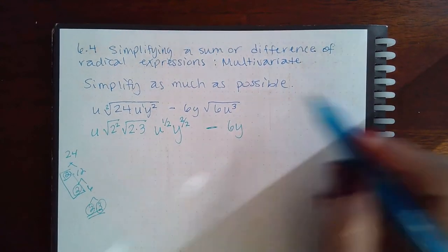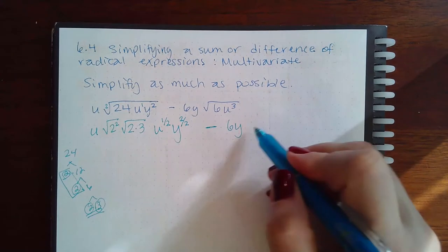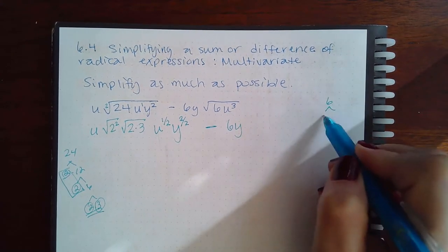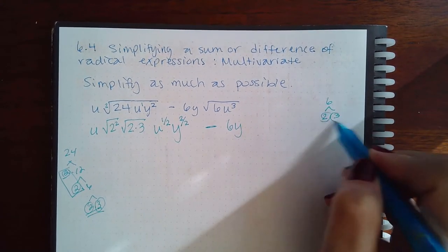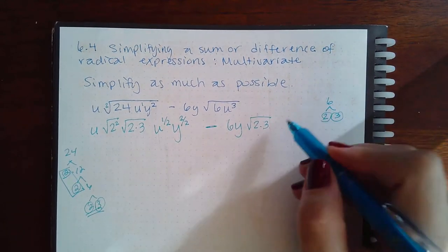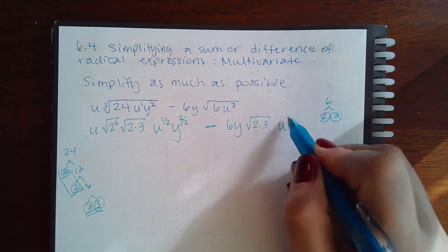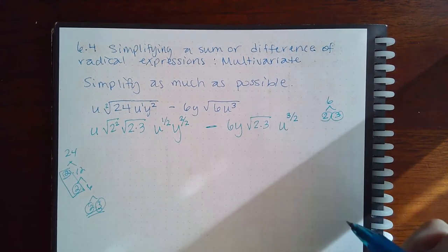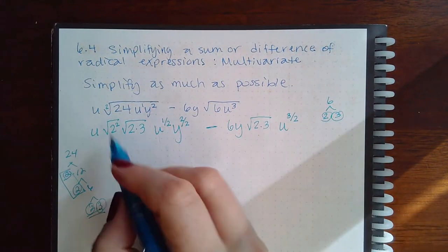Then I have the 6y already there. You can break up 6 but all it breaks up to is 2 and 3 and there's no pairs, so you're just going to have the 2 and the 3 together in the square root. And then the variable is going to be u to the 3 over 2.